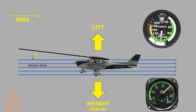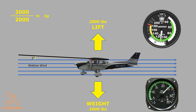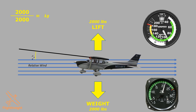But what if we're slower? Let's reduce power, pitch up, and slow down to just above 90 knots. We're maintaining equilibrium, so lift stays at 2000 pounds and load factor is still 1g. This isn't the abrupt pitch-up maneuver we just tried before. Now, in order to maintain lift, we need a higher angle of attack — 6 degrees.